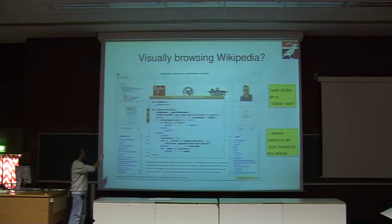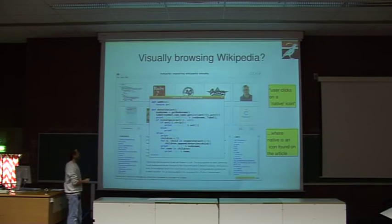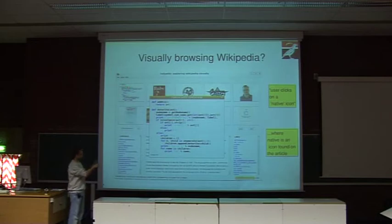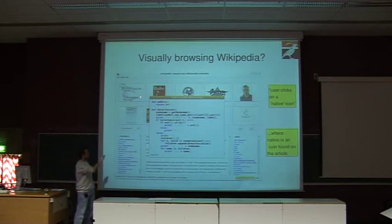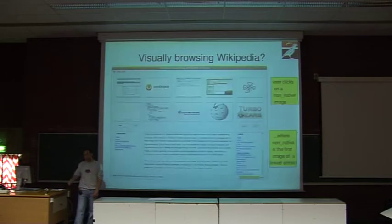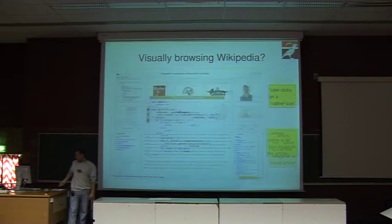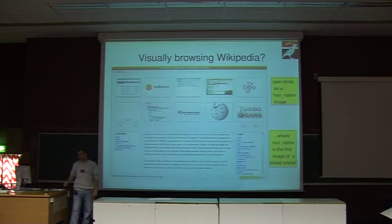If I click on the first image, which Inwiki considers a native icon because it found this image inside the article we are looking for, I get the image at its native size. Now, if I click on any of the other images, the program performs a new query — a new search with that article. Here I pressed on Zope, and I get redirected and am now performing a new search with Zope.